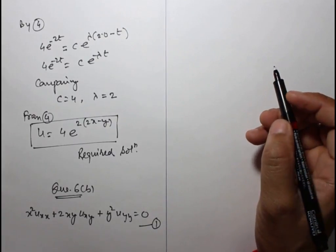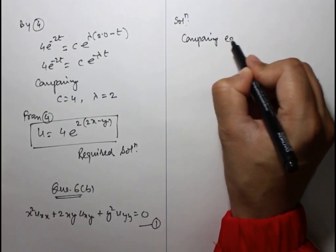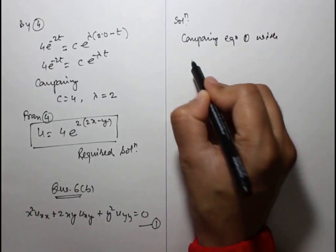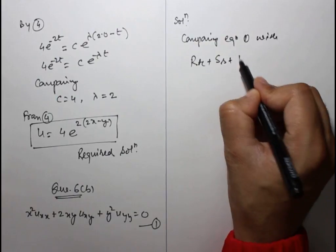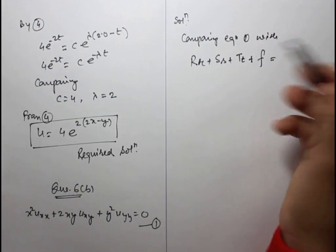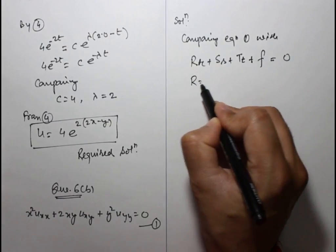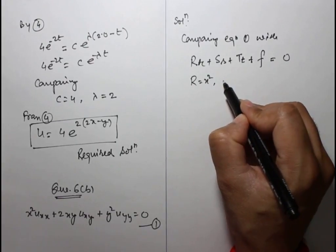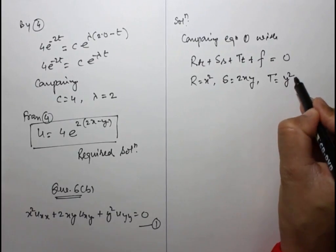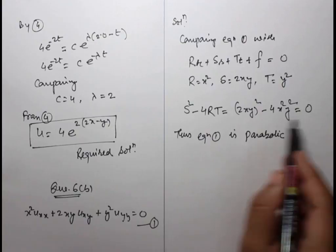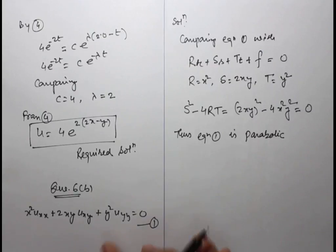This is equation 1. Comparing with Ruxx plus Suxy plus Tuyy plus F equals 0, we get R equals x², S equals 2xy, and T equals y². Since S² minus 4RT equals 0, equation 1 is parabolic.